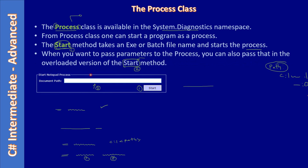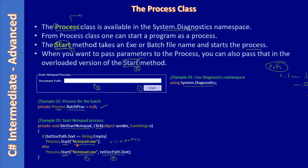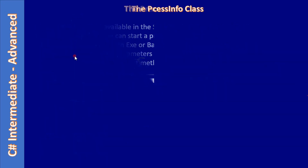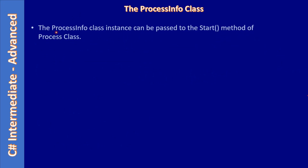In the previous video we learned about the Process class, and using the Process class we saw how to start an executable file as a process. We started notepad.exe as a process. When we explored the start function from the Process class, we used two overloaded versions — first specifying the exe, then also specifying the exe along with the path, using the ProcessStartInfo class. That instance can be passed to the start method. We already saw two overloads of the start method.